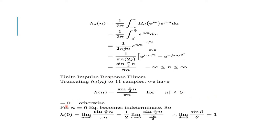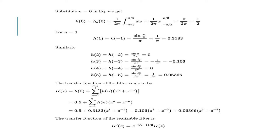H(n) takes the value 0 otherwise. For n = 0, substituting in the equation becomes indeterminate — 0/0 form. So apply the sinc function: limit n→0 of sin(πn/2)/(πn). We know that limit θ→0 of sin(θ)/θ = 1. Taking out constants and simplifying, after substituting n = 0 we get the value 1/2. So using this sin(θ)/θ format, we avoid the indeterminate form.